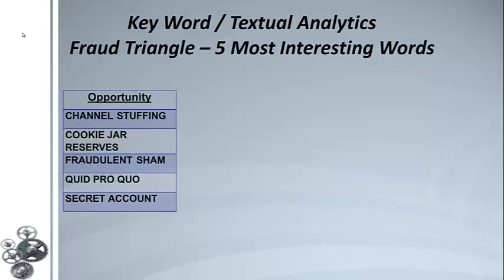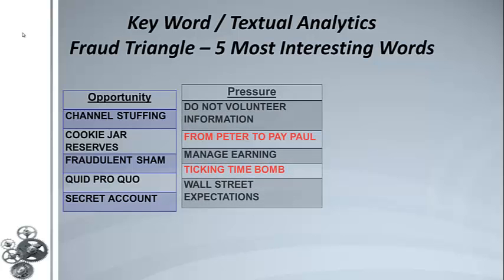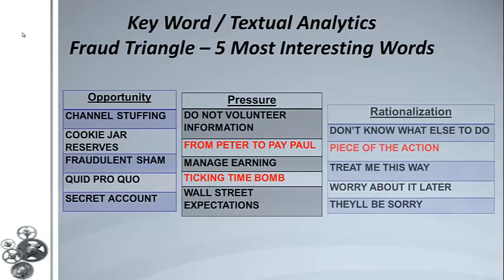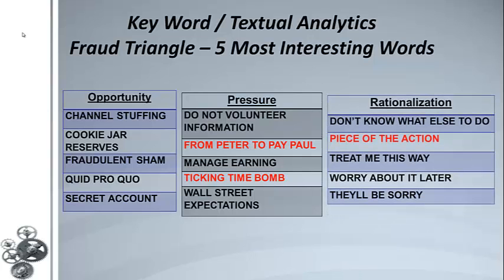Examples have been given in all three areas — opportunity, pressure, and rationalization — with the three most interesting words and statements highlighted in red from the survey. The keywords related to the fraud triangle can be categorized into these three categories.